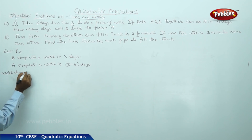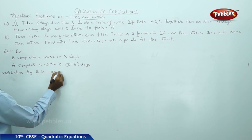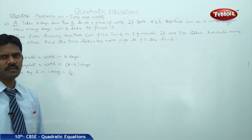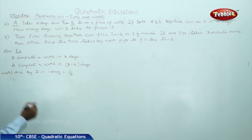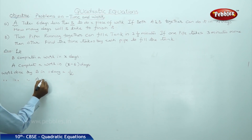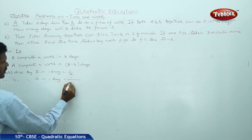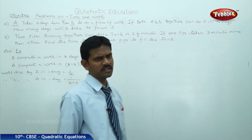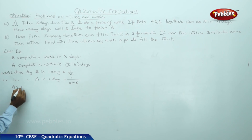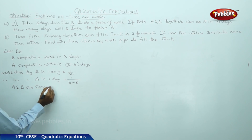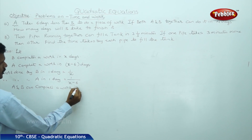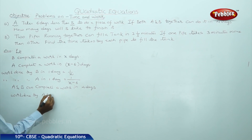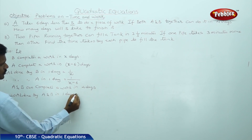Work done by B in one day is 1 by X. For example, if a person can complete a piece of work in 10 days, the work done by him in one day is 1 by 10. Similarly, work done by A in one day is equal to 1 by X minus 6. According to the question, if both A and B together can do it in 4 days, then work done by A and B in one day is 1 by 4.